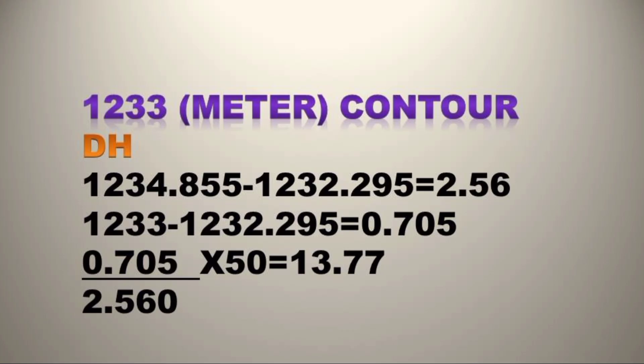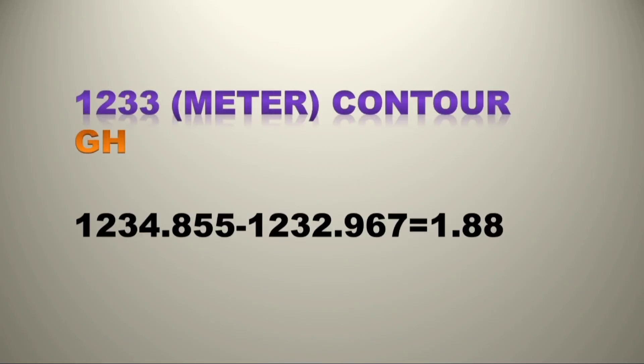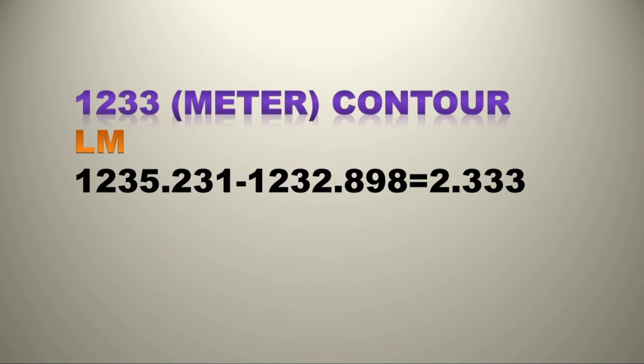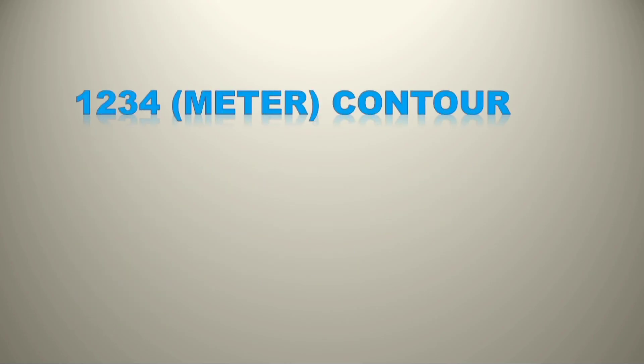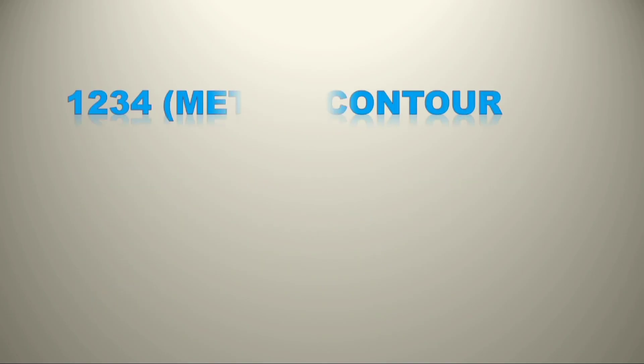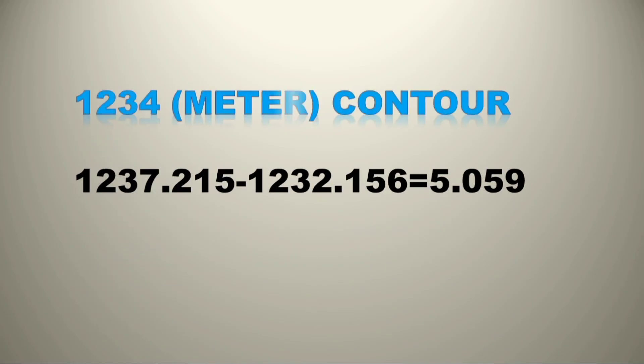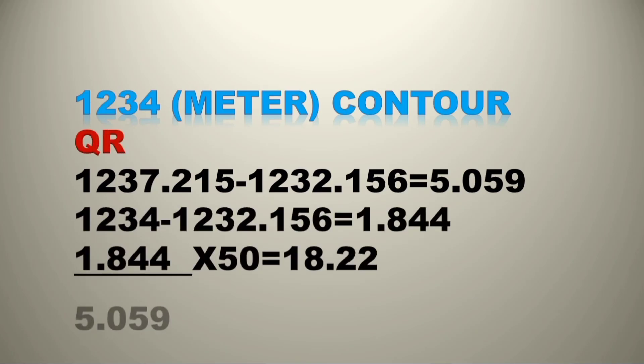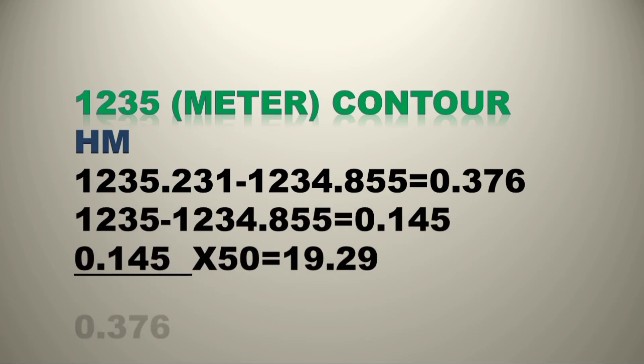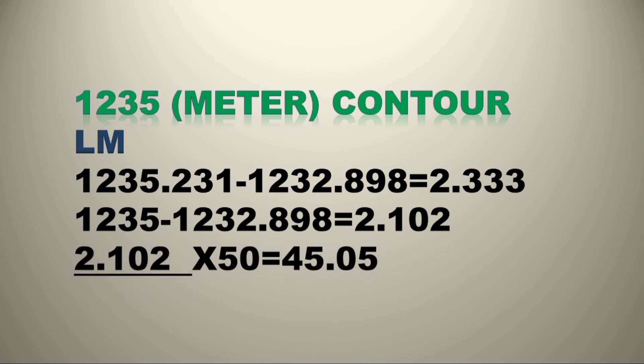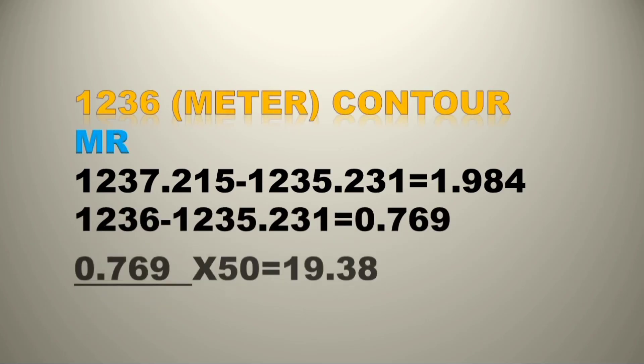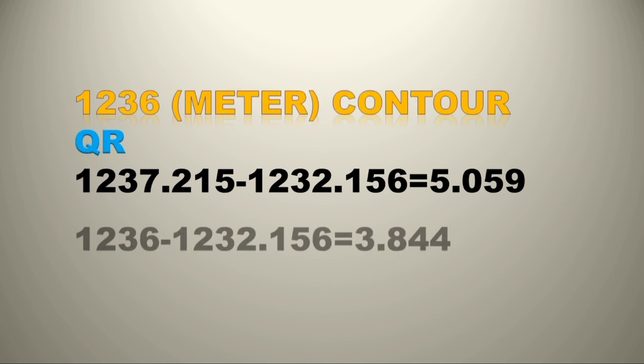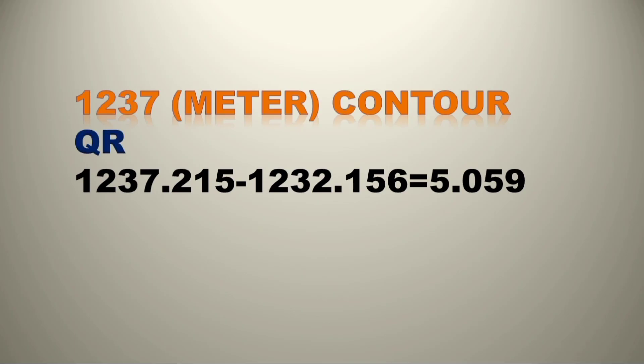After we do the same to the other points where our 1233 meter contour lies, we will get all our answer as illustrated in the screen above. In the same manner, we will make the other contour lines of 1234, 1235, 1236 meters contour. We are going to do the same to all other points. After which, by use of scale, we'll plot the contours and we'll have finished our illustrations. All of that I've done it in the screen and you can revise.